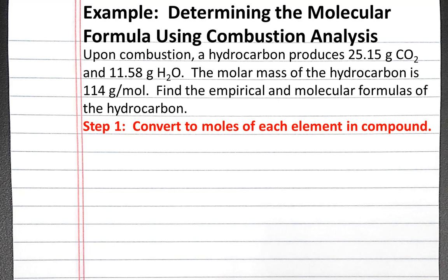Our first step is to convert to moles of each element in the compound. In combustion analysis, we assume that all of the moles of carbon in the hydrocarbon will produce CO2, and all of the moles of hydrogen will produce H2O. So we'll convert 25.15 grams of CO2 into moles of carbon, and 11.58 grams of H2O into moles of hydrogen.